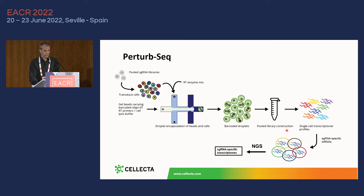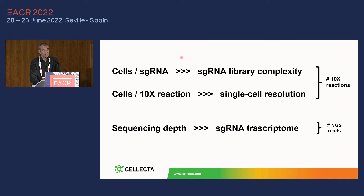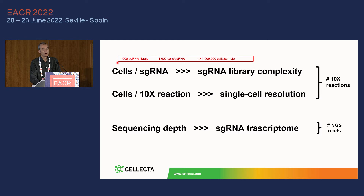Now let's look at the parameters that need to be optimized to run a PerturbSeq screen. You have cells and sgRNA coverage. In order to get a reliable transcriptome picture for one sgRNA, you need to pool single-cell transcriptomes from several cells — hundreds or thousands. For a regular standard CRISPR screen, the accepted number is 500 to 1,000 cells per sgRNA. Assuming a small library of only 1,000 sgRNAs, you would have about 1 million cells.